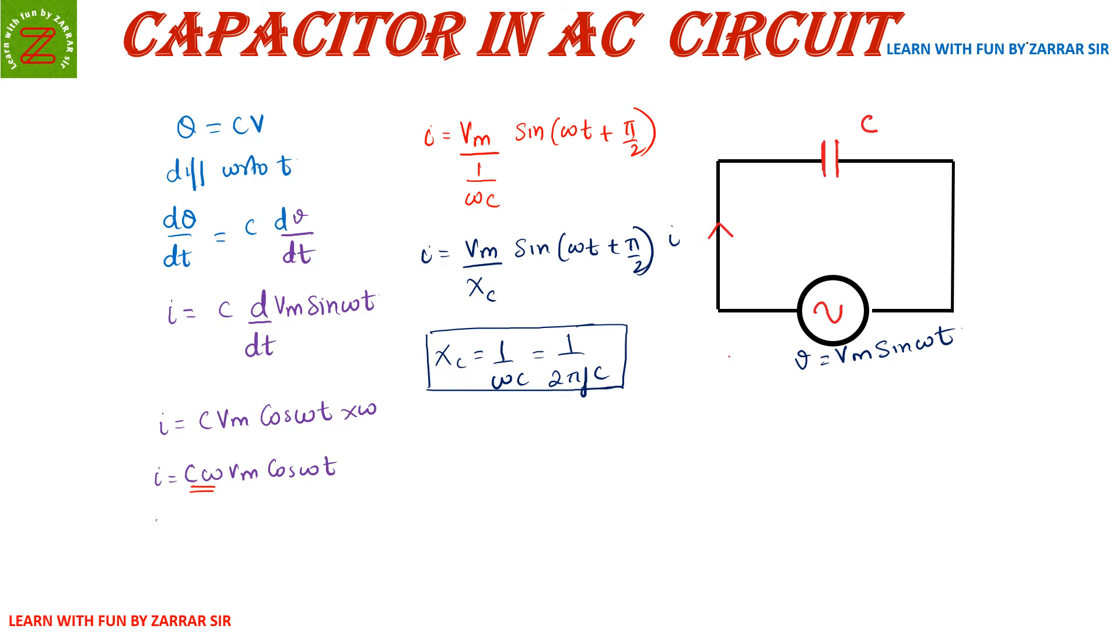Now if we can correlate the equation of voltage and current, we can understand that in current, current is leading the voltage by a phase difference of π/2.